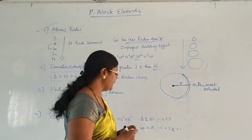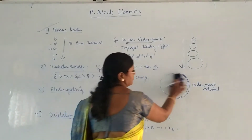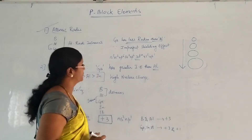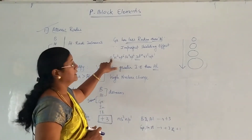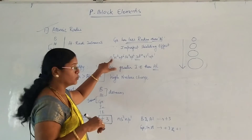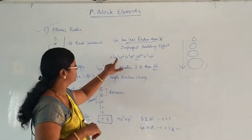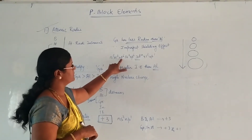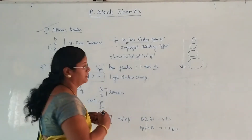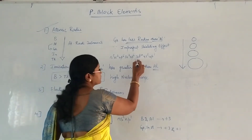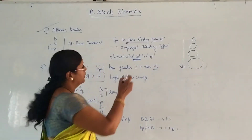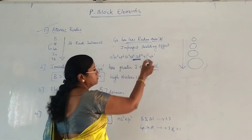To understand this, let us look at Gallium's electronic configuration: 1s², 2s², 2p⁶, 3s², 3p⁶, 3d¹⁰, 4s², 4p¹. There is a presence of d-electrons — specifically 3d¹⁰ — in the third orbit, before the outermost 4s and 4p electrons.